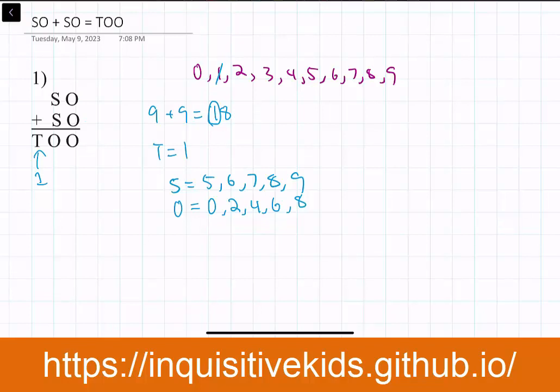But we can see that when we add zero, if O is zero, zero plus zero, it still equals zero. And zero is the only number out of these numbers that work out, which means that S would equal five, and O would equal zero.